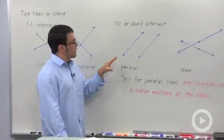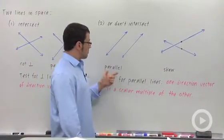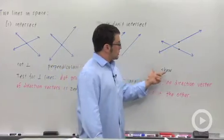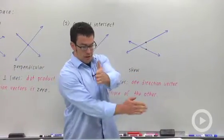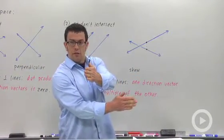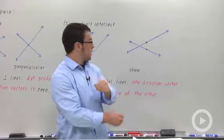Now if the lines don't intersect, the lines could be parallel or they could be skew. Remember skew lines are kind of like this. They never intersect one another and yet they're not parallel.